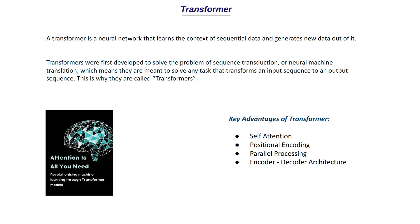The second key advantage is positional encoding. Transformers don't have an inherent way to know the position of a word in a sentence, so positional encoding encodes each token relative to its position, allowing the model to know where a particular word sits. This is different from RNNs, which process words sequentially one at a time and remember previous words. Transformers use positional encoding instead of going word by word.